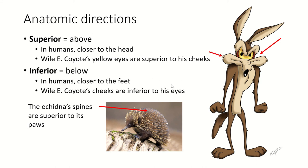Inferior means below. And in humans, this means closer to the feet. Wile E. Coyote's cheeks are inferior to his eyes. His eyes are inferior to his ears. So now notice that when we're using these terms, they are relative terms. We can't say the eyes are superior because they're not superior to everything. The eyes are superior to the mouth, but the eyes are inferior to the ears. So remember that these terms are relative. We're talking about something relative to something else. We could talk about the superior end of something, but we can't talk about something just being superior.